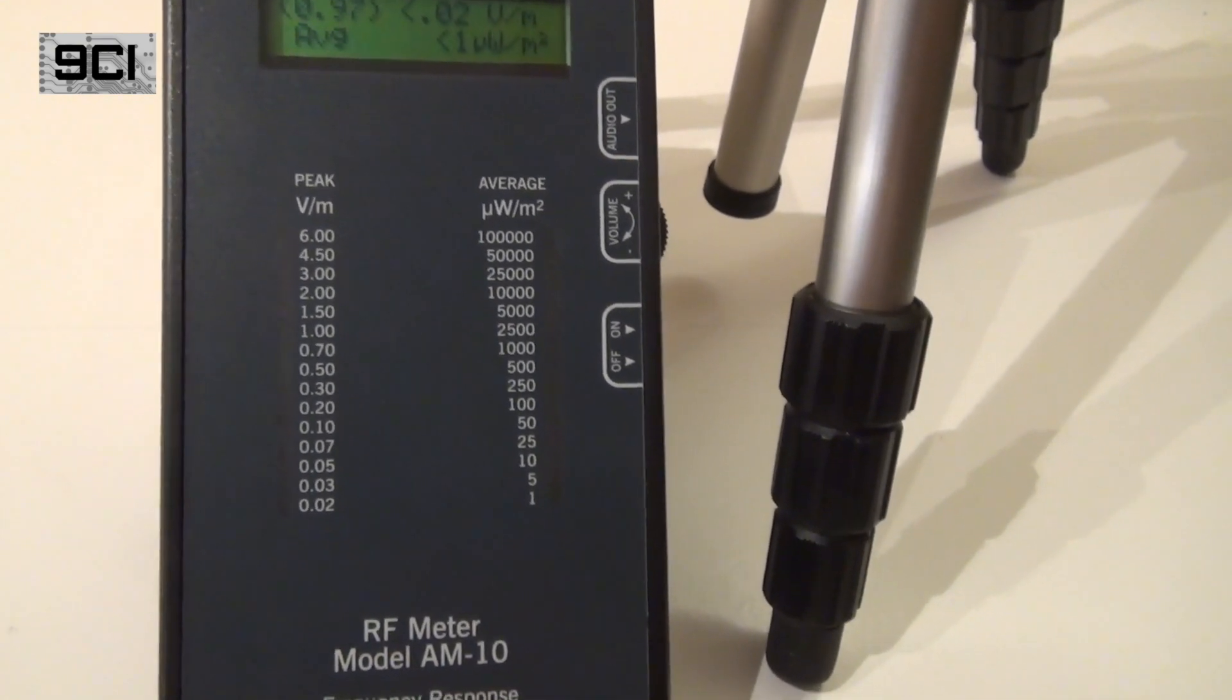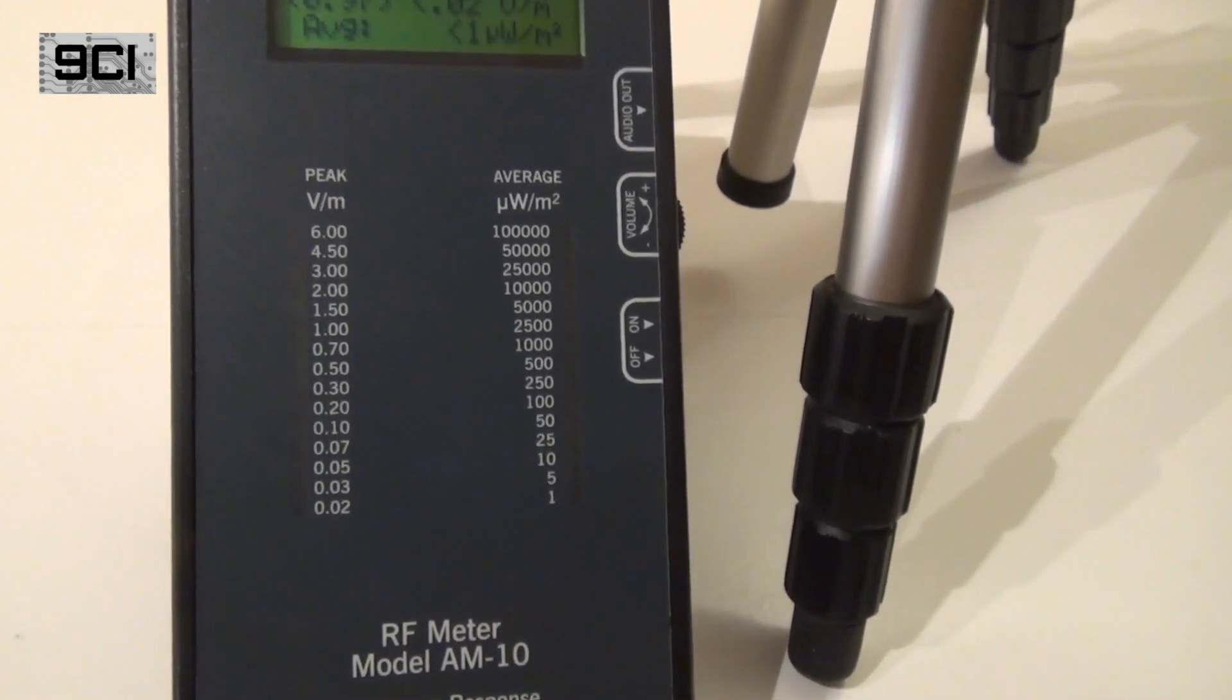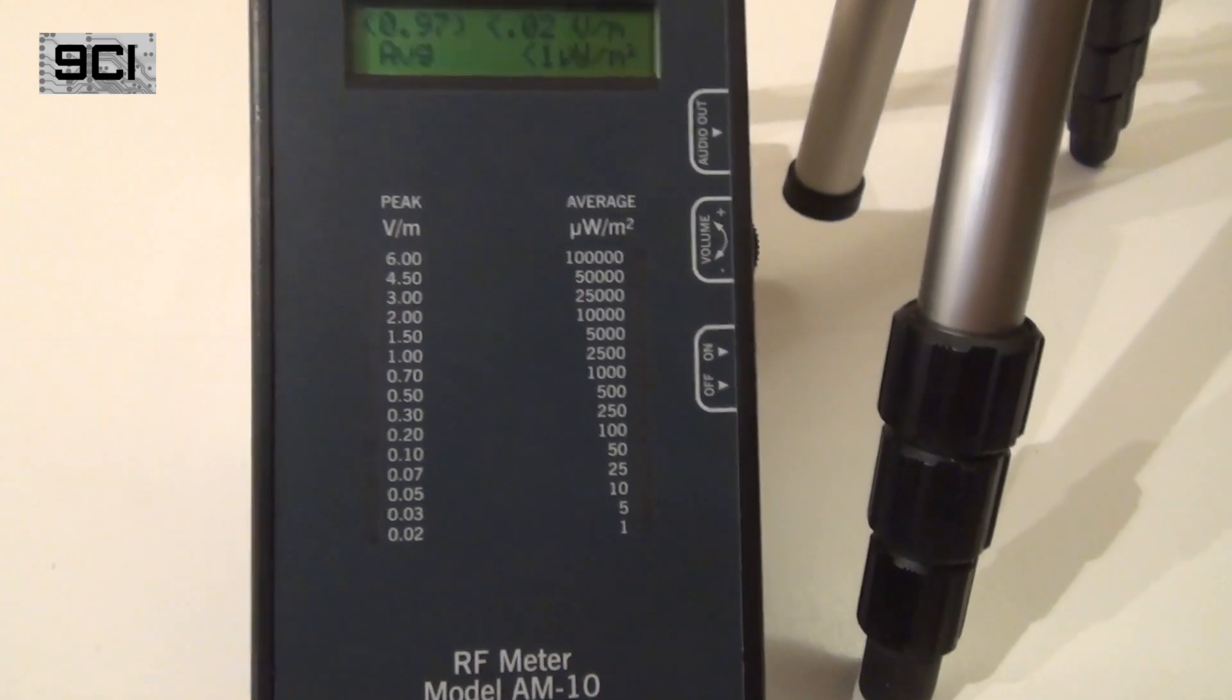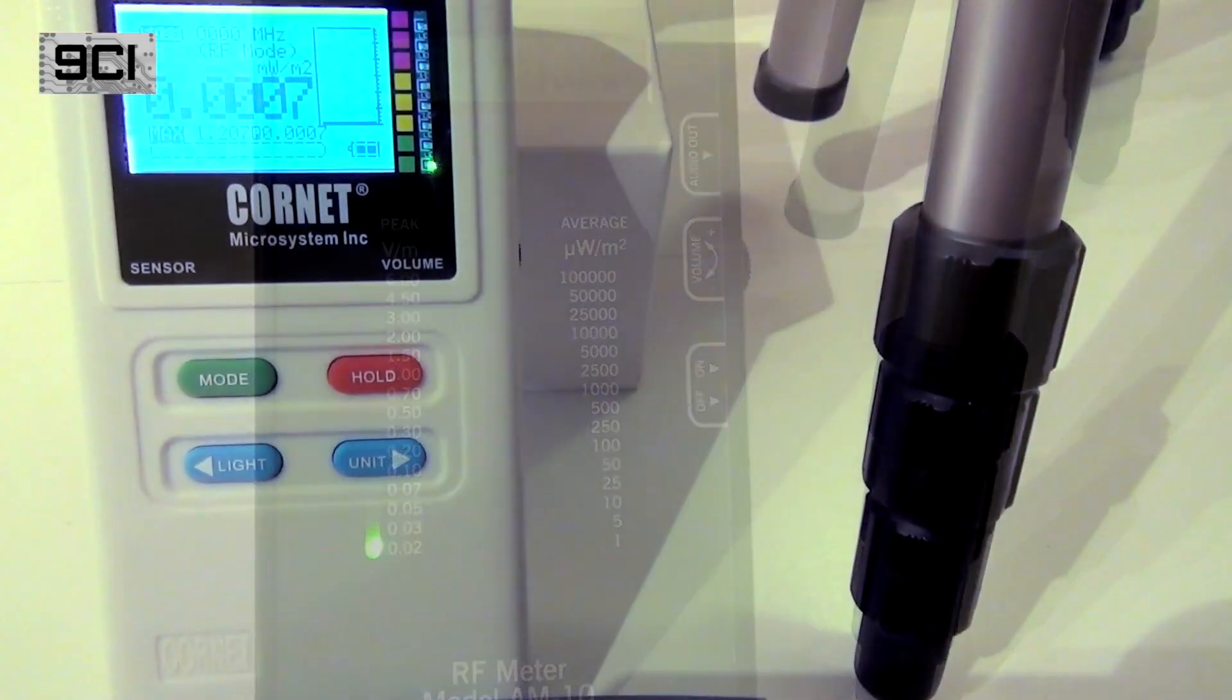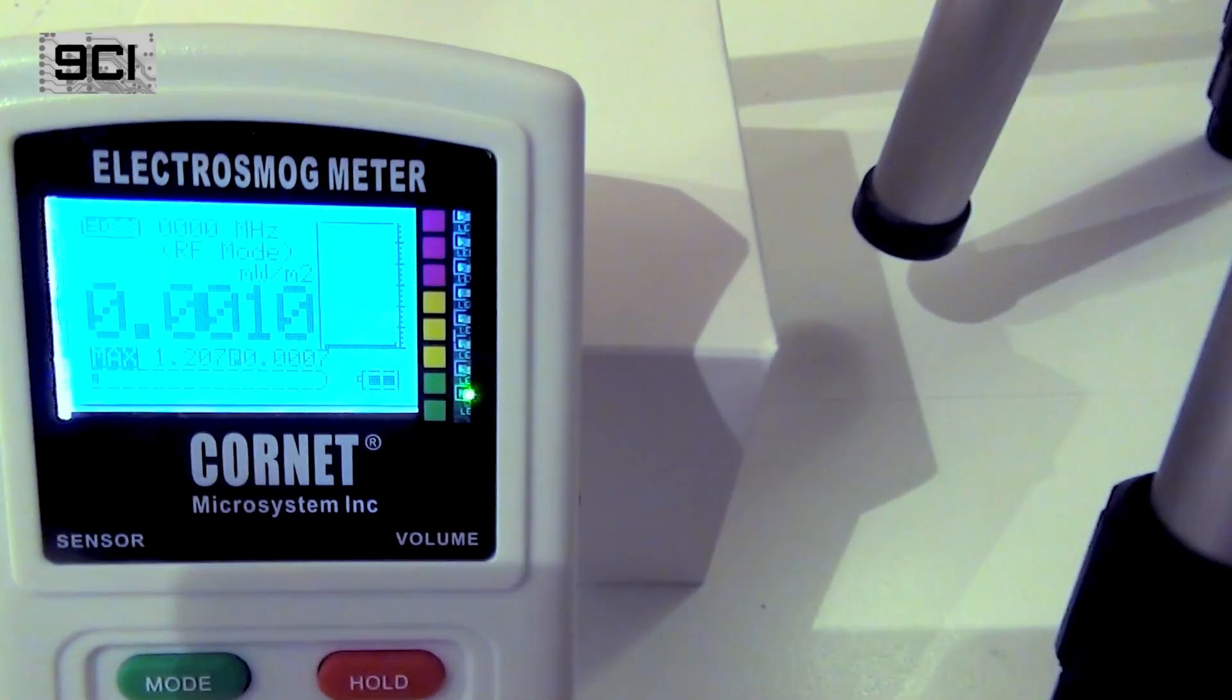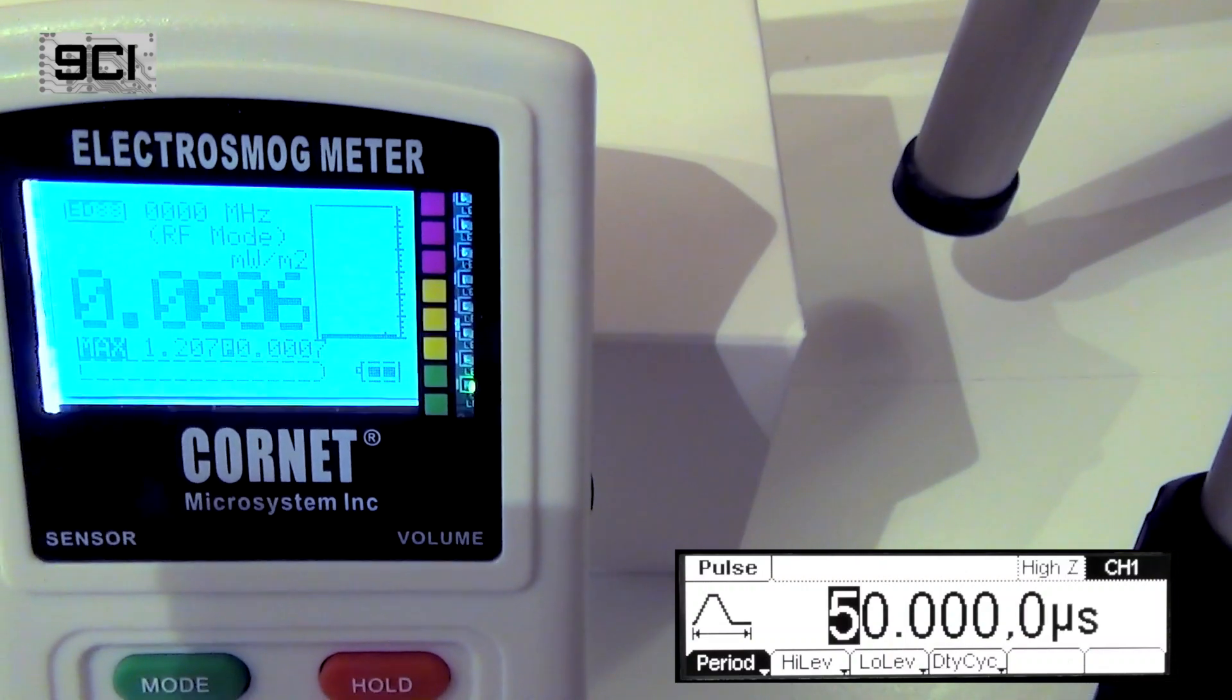I will not go down to 5 and 3 microseconds because this meter will not be able to measure those narrow pulses. Now we're using the cornet and we're at 50 microsecond pulses.